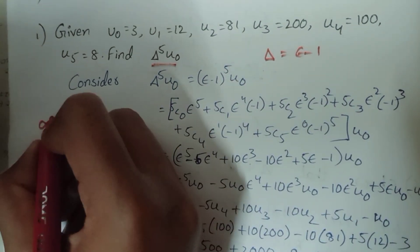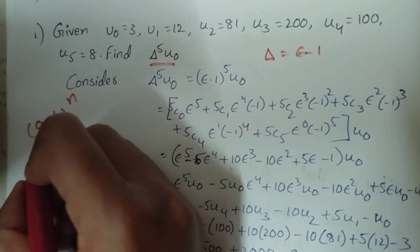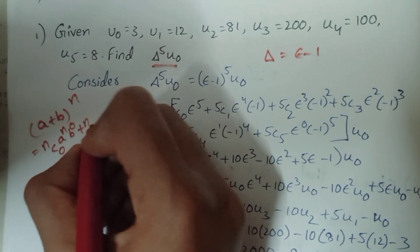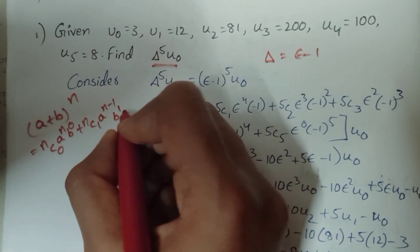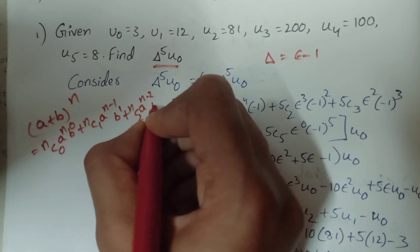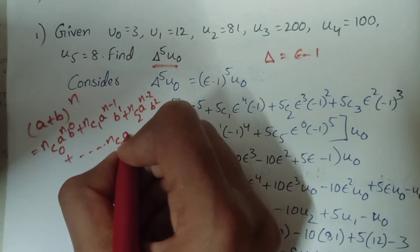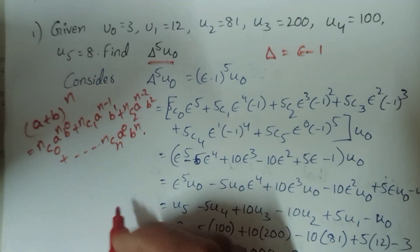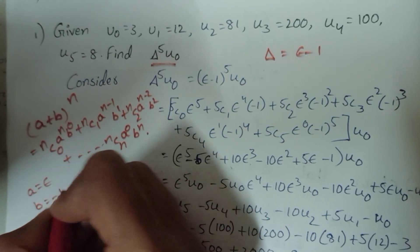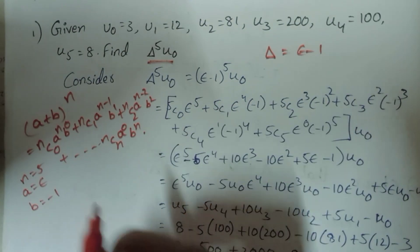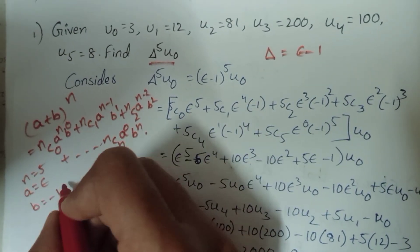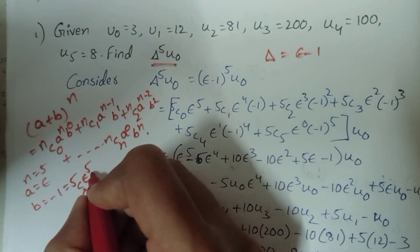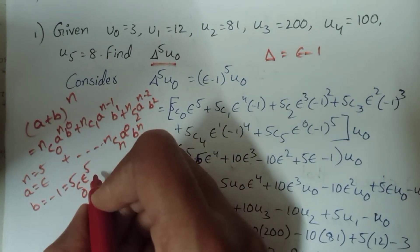Now we use the (a plus b) whole power n binomial expansion formula. With a equal to e, b equal to minus 1, and n equal to 5, we substitute to get 5C0, then the formula gives e power 5 terms. The value of 5C0 times (minus 1) power 0, which is 1, equals 5C0.